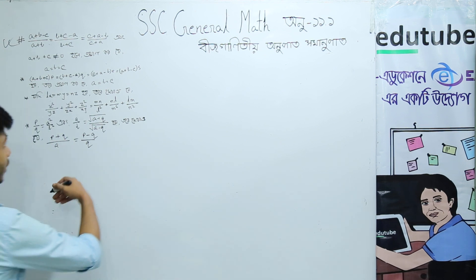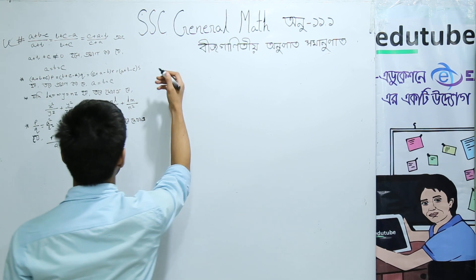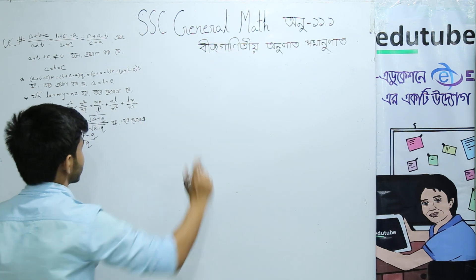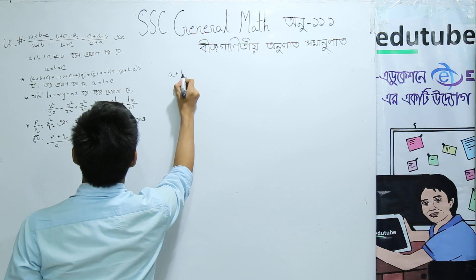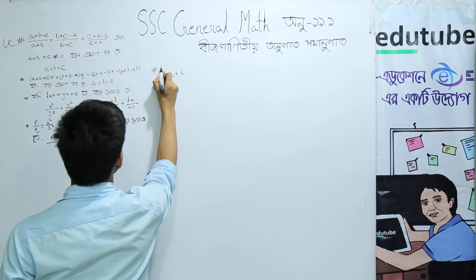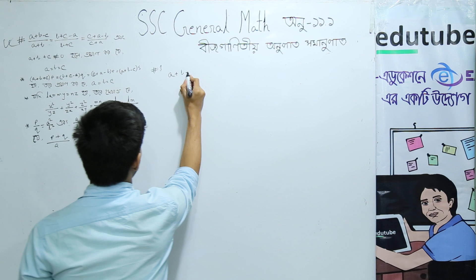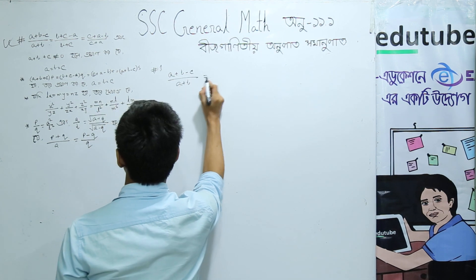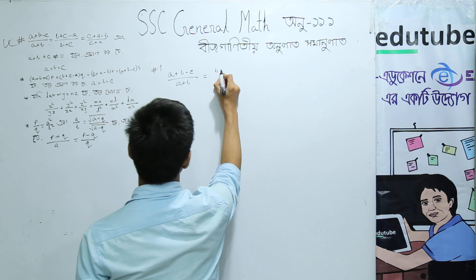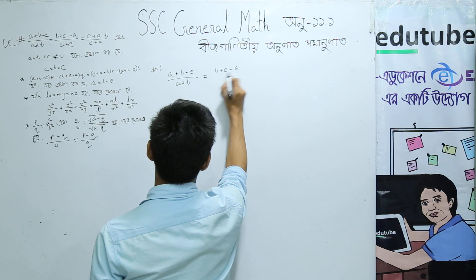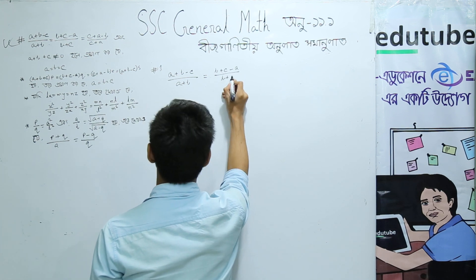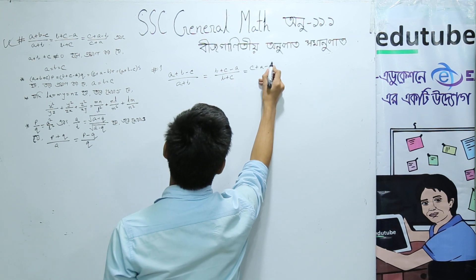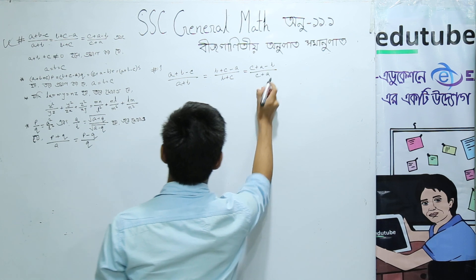Okay, now we will start with the first class today. We will find the next three digits — that means a plus b. At the first method, (a plus b minus c) by (a plus b) equals (b plus c minus a) by (b plus c) equals (c plus a minus b) by (c plus a).